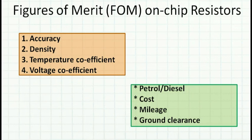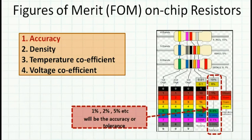In a PDK or process design kit, we will have many types of resistors. How do I choose which resistor is useful for my design? Just like choosing a car based on specifications such as fuel type, cost, mileage, and ground clearance, when I choose a resistor for on-chip use I look into figures of merit. The most important figures of merit are accuracy, density, temperature coefficient, and voltage coefficient.